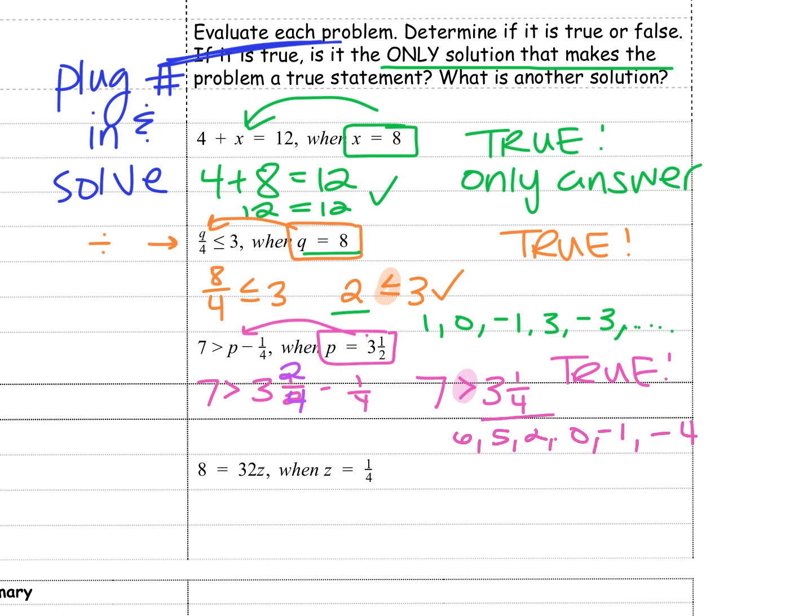And last but not least, 8 equals 32z. That implies we're multiplying, and z is 1/4. So 8 equals 32 times 1/4. Well, 32 times 1 is 32. 1 times 4 is 4. 32 divided by 4 is 8. So 8 equals 8. Once again, it's true. But because it's equal, that's the only answer.